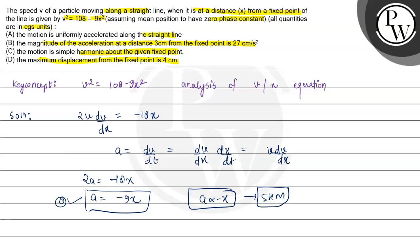Option A is given as the motion is uniformly accelerated along the straight line - the motion is non-uniform. Option B is the magnitude of acceleration at a distance of 3 cm, which is -27 cm per second squared. The final answer for this problem is option B and option C.